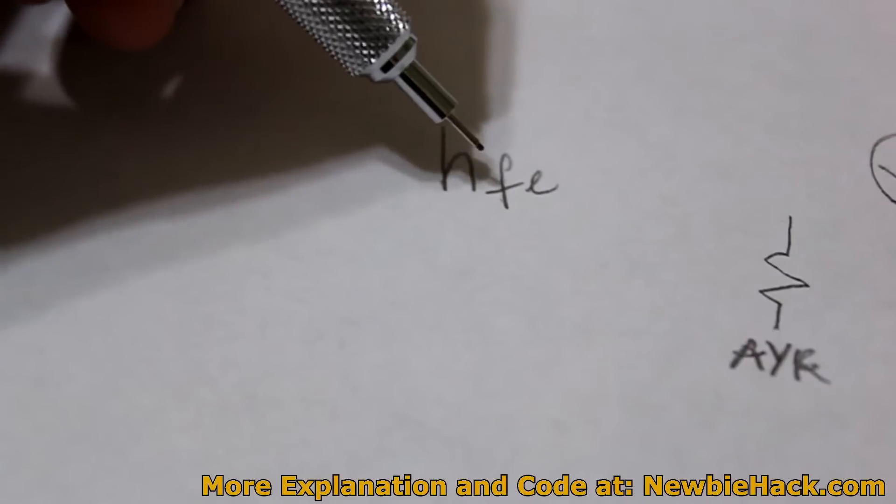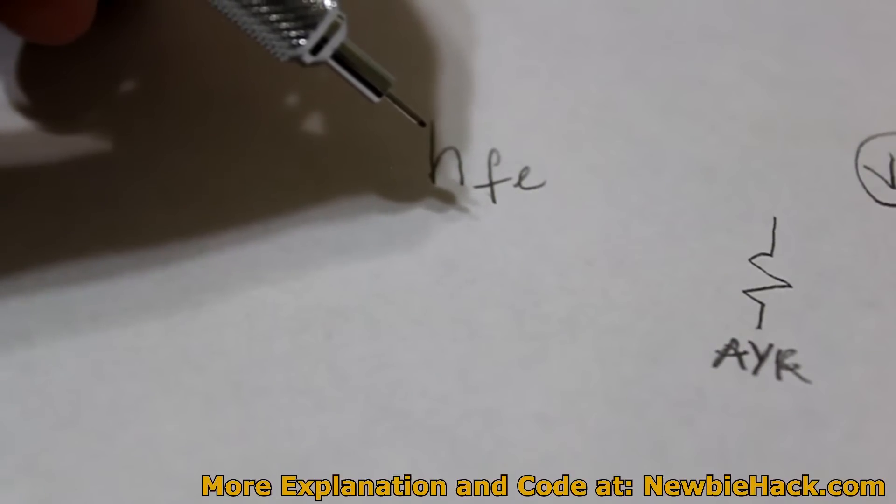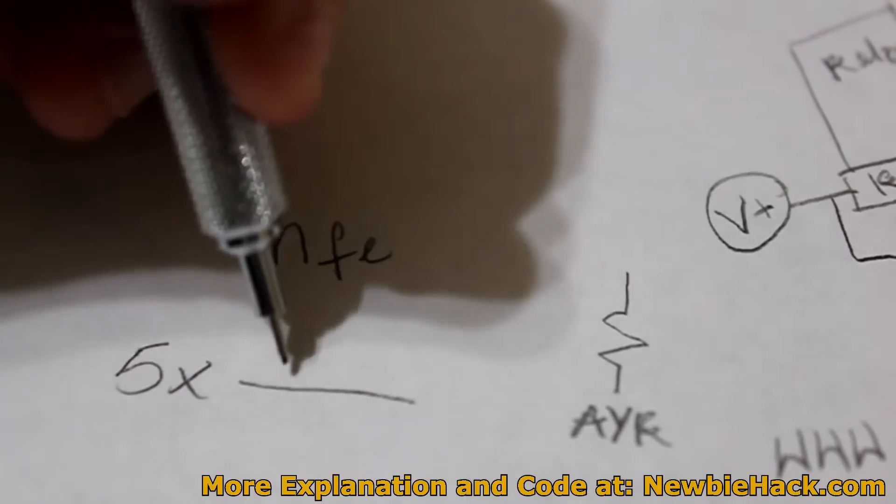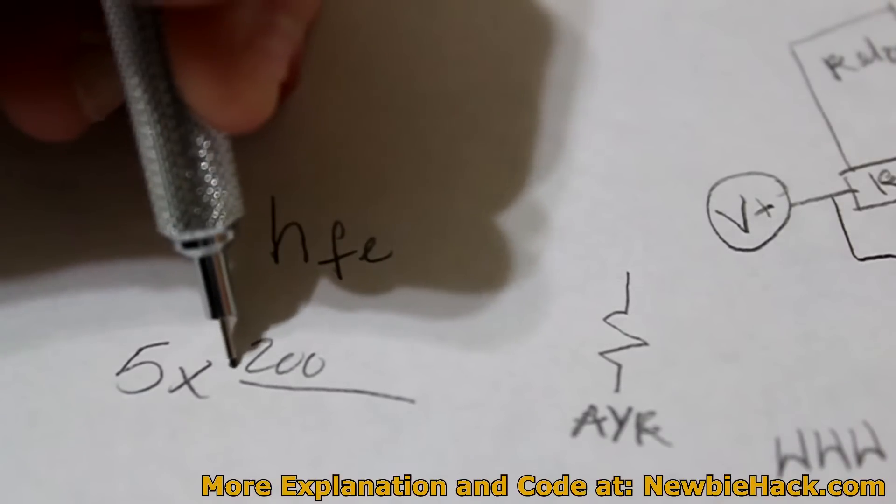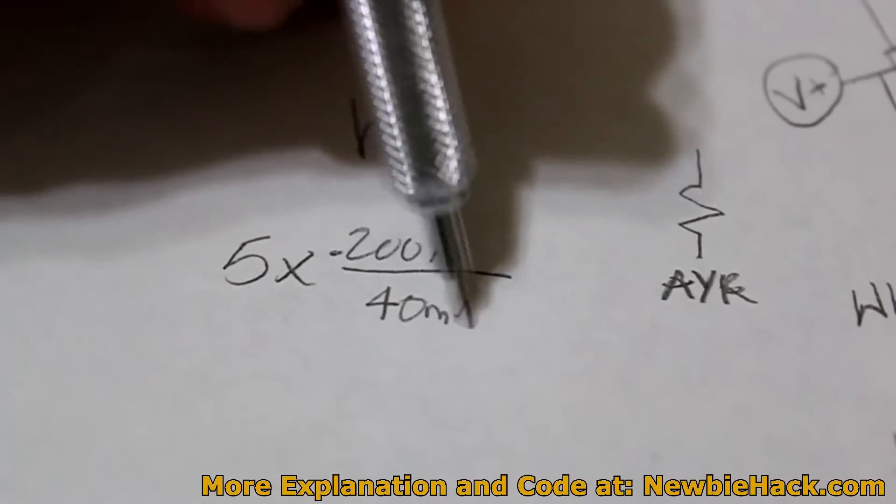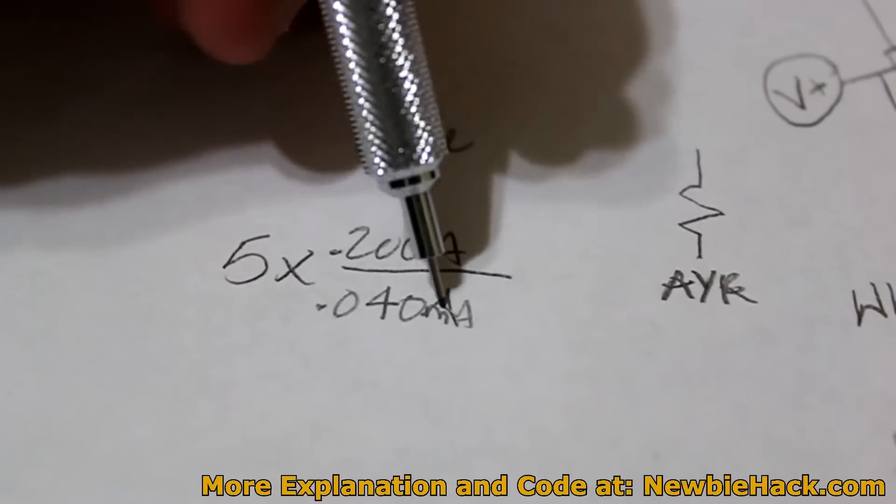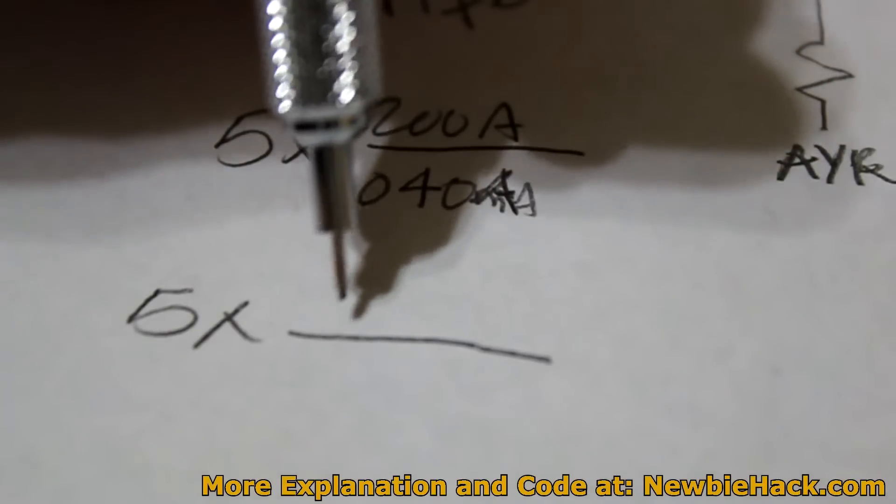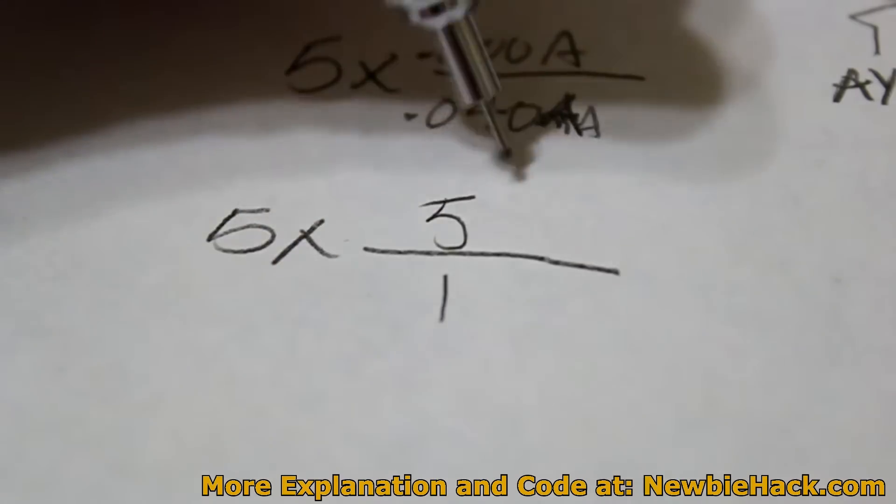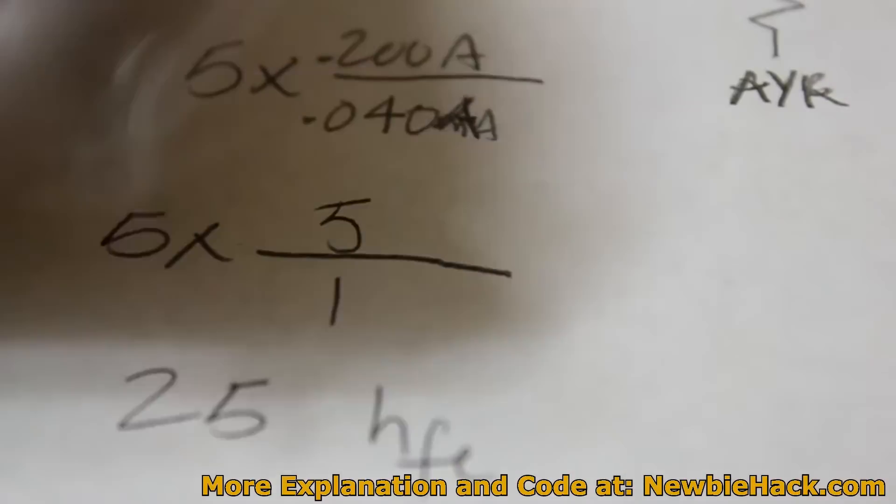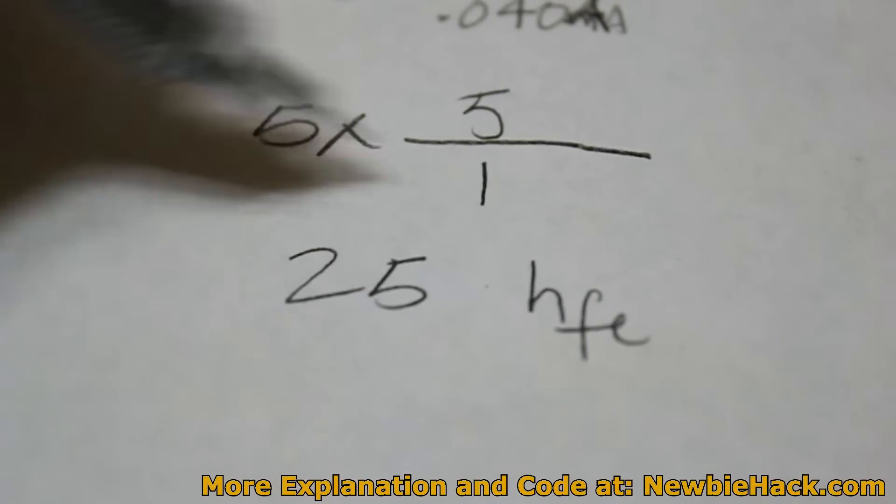So the formula for this, the HFE has to be 5 times the load current divided by the maximum output current from the AVR chip. So the current will be 5 times the 200 milliamps or 0.2 amps over the IC or the AVR pins can output 40 milliamps or 0.04 amps. So 200 divided by 40, or 0.2 divided by 0.04, is equal to 5 over 1, or 5. So 5 times 5 is 25. So the HFE value must be at least 25. And I have 200, so I'm within range.